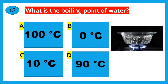What is the boiling point of water? 100 degrees Celsius, 0 degrees Celsius, 10 degrees Celsius, 90 degrees Celsius. The correct answer is 100 degrees Celsius.